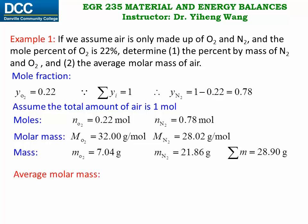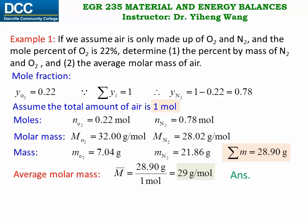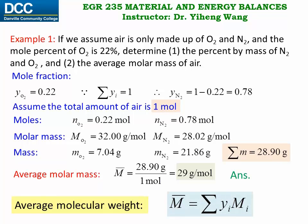For average molar mass, recalling from the previous video, molar mass is defined as mass divided by the total number of moles. We have already calculated the total mass as 28.90 grams and the total number of moles as 1 mole. Therefore, the average molar mass for air, reported with appropriate significant figures, is 29 grams per mole. Based on this example, we can also derive a useful formula: the average molecular weight of a mixture equals the sum of yi times mi, where yi is the mole fraction and mi is the molecular weight of each component.